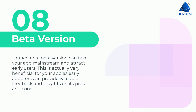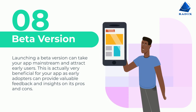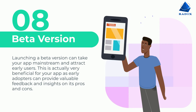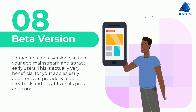Step 8: Beta Version. Launching a beta version can take your app mainstream and attract early users. This is very beneficial for your app, as early adopters can provide valuable feedback and insights on its pros and cons.